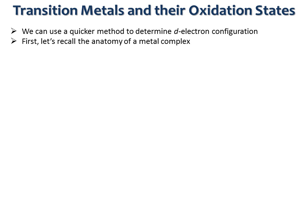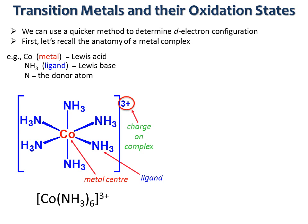Let's recall the anatomy of a metal complex. A central metal atom or ion, which is a Lewis acid — a good electron pair acceptor — is bound to a number of neutral or anionic ligands, which are Lewis bases, that is, good electron pair donors. The coordination number of the metal centre is the number of donor atoms attached to the metal. Complexes can have between 2 and 10 donor atoms, but the great majority have only 4 or 6 ligands. In most complexes, the ligands are at the corners of an octahedron in octahedral complexes, and these complexes can be neutral or charged. We write the formula of a metal complex with square brackets.